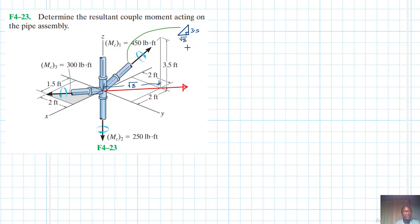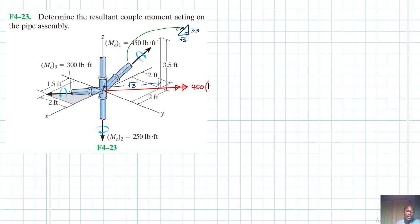So this becomes the square root of 3.5 squared plus 8, which gives us 4.5. Now this is a moment vector, so we show it as 450 times root of 8 divided by 4.5.